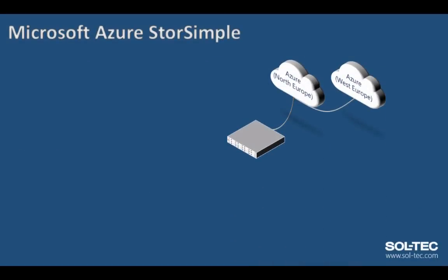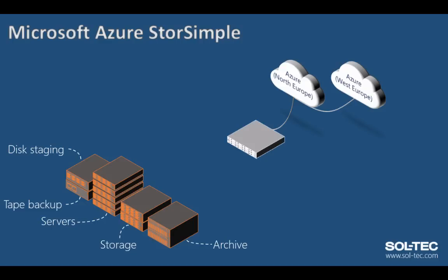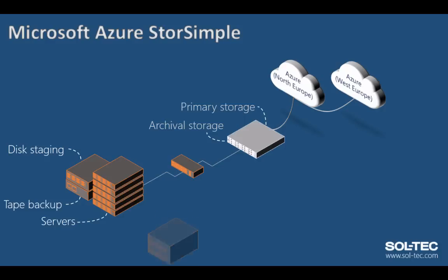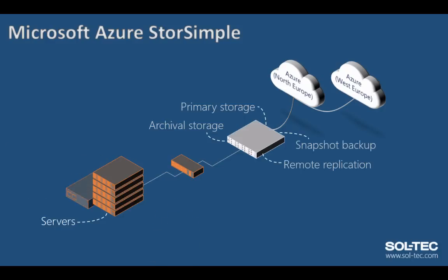Now let's go back to the start and see how StorSimple fits into standard environments. Once Windows, Linux or VMware servers are connected to the appliance via iSCSI, it provides a primary storage solution and archival storage, and between snapshot backups and remote replication you've removed the need for disk staging and tape. This makes StorSimple an ideal DR solution which you can actually test, rather than just relying on documents that detail what you want to do in a disaster.